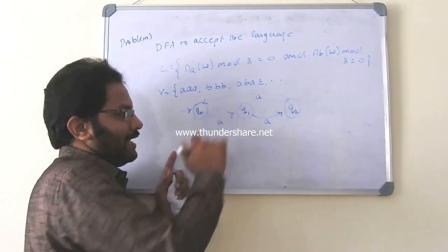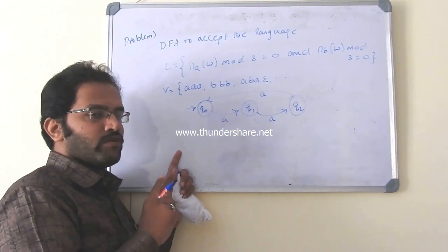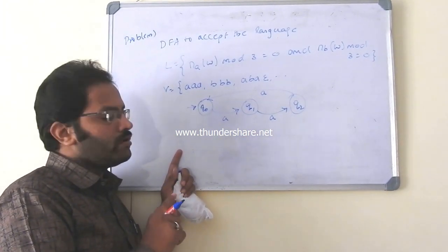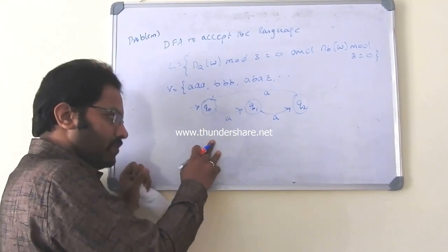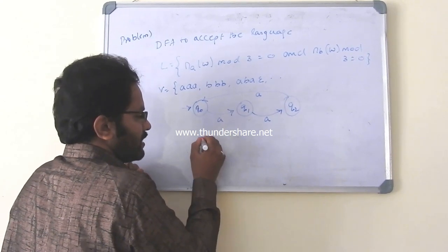This we have done in the previous problems, where we said number of symbols in W mod 3 is 0. So now it is 3 A's. But remember, there it was only single A. Now one should worry about B's also. So how do I do? Check for A's. So we write in 3 cross 3 matrix fashion.